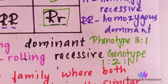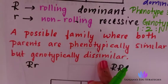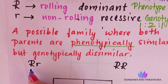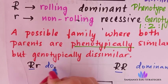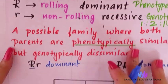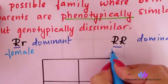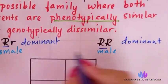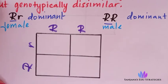Now see another example: a family where both parents are phenotypically similar but genotypically different. Phenotypically similar means they have the same observable character — both are dominant. But genotypically, one is homozygous dominant (RR) and the other is heterozygous dominant (Rr). We write male as RR and female as Rr, then cross them.